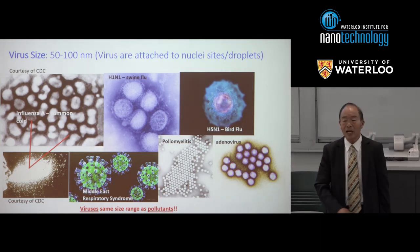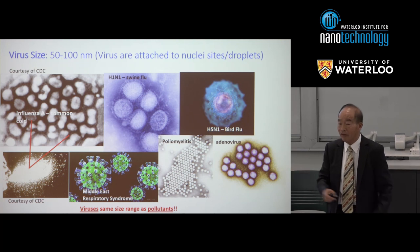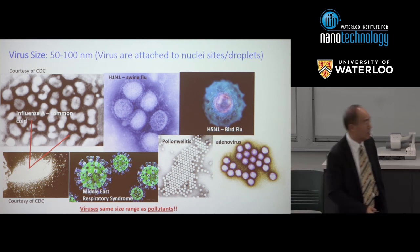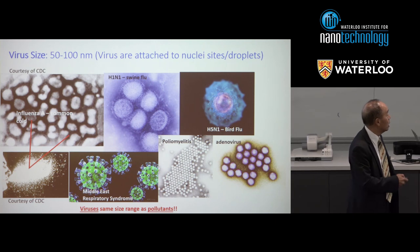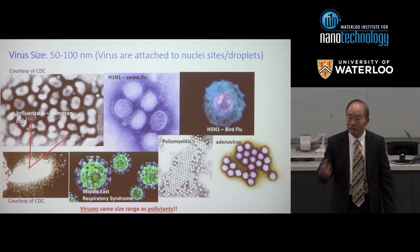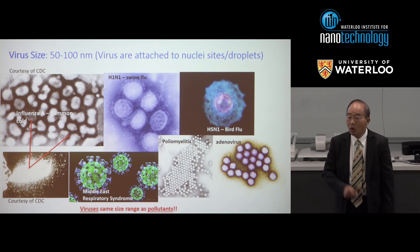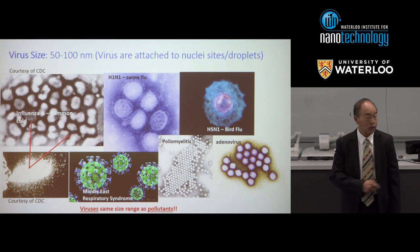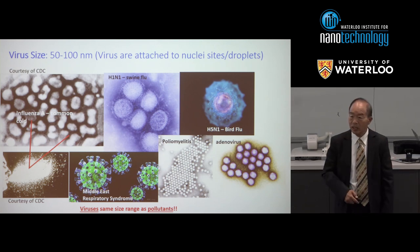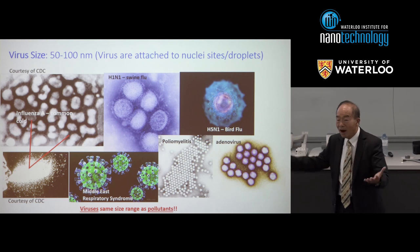Also think about viruses — not just exotic ones like SARS, MERS, or bird flu, but even the common cold. All these viruses are in the nano aerosol range, 50 to 100 nanometers. So in the air you have both viruses and pollutant particles of similar size.